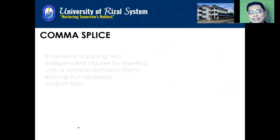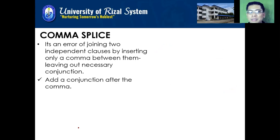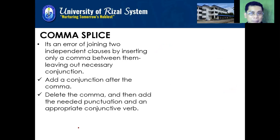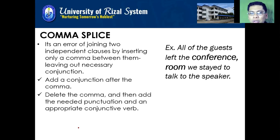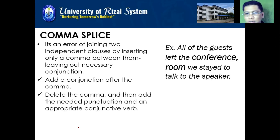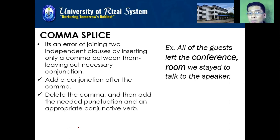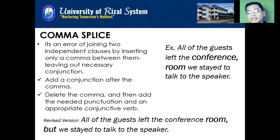This is the opposite of a run-on sentence. In a comma splice, we put a comma where we should not — using a comma without a conjunction. For example: 'All of the guests left the conference room, we stayed to talk to the speaker.' We do not use a conjunction or coordinator; we just put a comma, making it incorrect. You can correct it by adding a coordinator or by using a semicolon instead. That is comma splice — the incorrect use of a comma in a sentence.